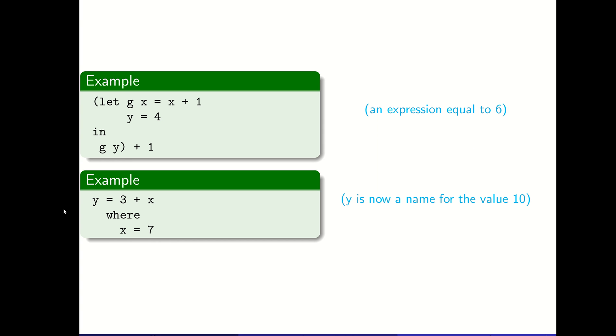On the other hand, we attach where to a definition like y equals 3 plus x, then we say where x equals 7. We're back-defining the x that was used there. It has to be attached to some definition, some statement like this, to be able to fill back in things. It's not an expression on its own that could result in an actual value like the let statement can.